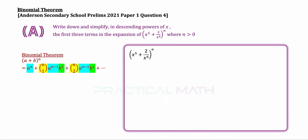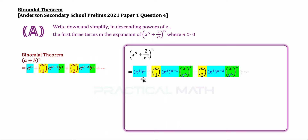To expand (x to the power of 5 plus 2 over x to the power of 6) to the power of n, x to the power of 5 is your a, and 2 over x to the power of 6 is your b. The first three terms are: (x^5)^n, plus nc1 times (x^5)^(n−1) times (2/x^6)^1, plus nc2 times (x^5)^(n−2) times (2/x^6)^2, plus further terms.